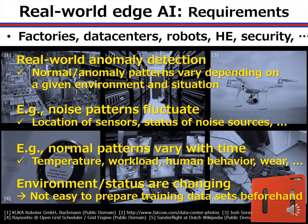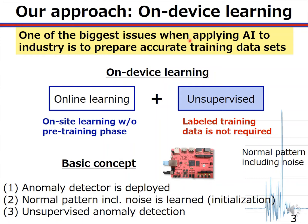The biggest issue when applying AI to industries is to prepare accurate training datasets beforehand. In order to address this issue, our approach is on-device learning that combines online learning and unsupervised anomaly detection. This is unsupervised, so labelled training data is not needed. Also, this is on-site learning without an offline learning phase.